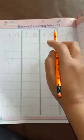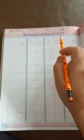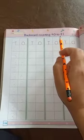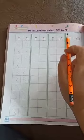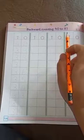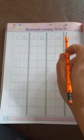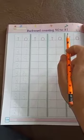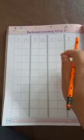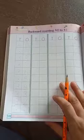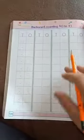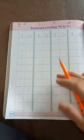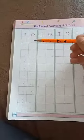Today we will do backward counting 42 to 31. Aaj hum backward counting kareenge 42, 31. In backward counting we go from bigger number to smaller number. So let's begin.